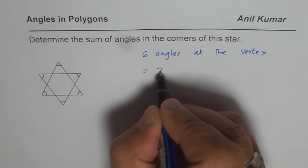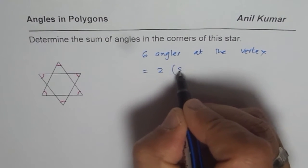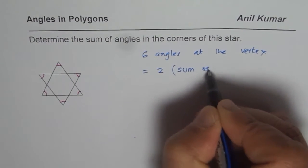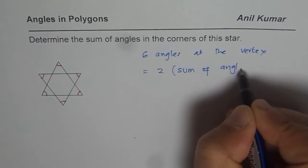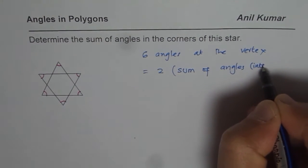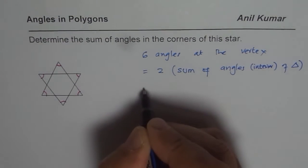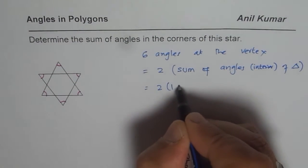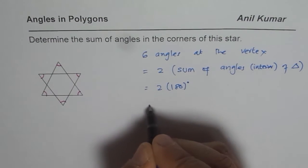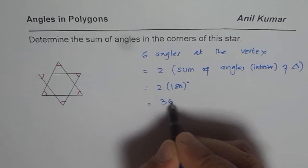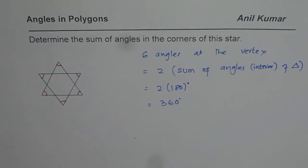Which is equal to 2 times sum of angles, I should say interior angles of triangles. So it is equal to 2 times 180 degrees and therefore this sum of angles is 360 degrees.